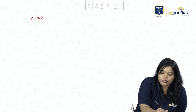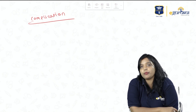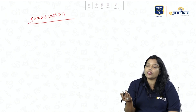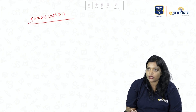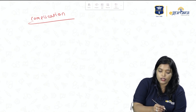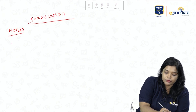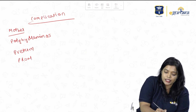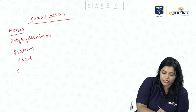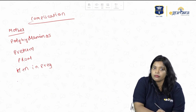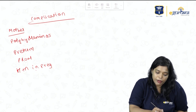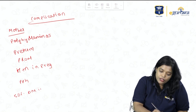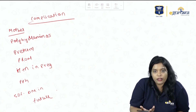Maternal complications: hyperglycemia in the mother causes hyperglycemia in the fetus. Glucose-induced osmosis leads to fetal polyuria and polyhydramnios. Polyhydramnios can cause preterm labor, PROM, placental edema, and big baby. Patients can develop hypertension in pregnancy and PPH. 50% of patients may develop diabetes mellitus in the future if they do not make lifestyle modifications.